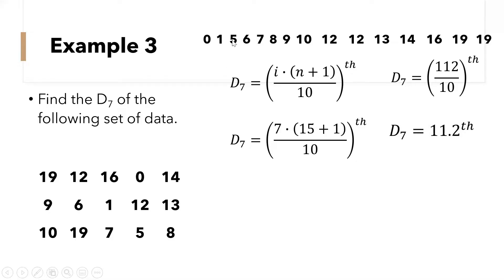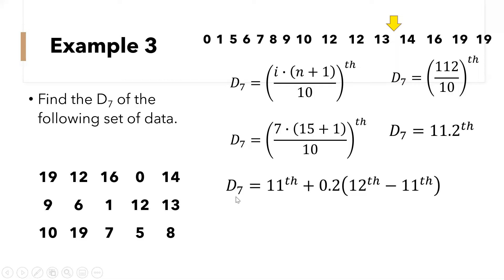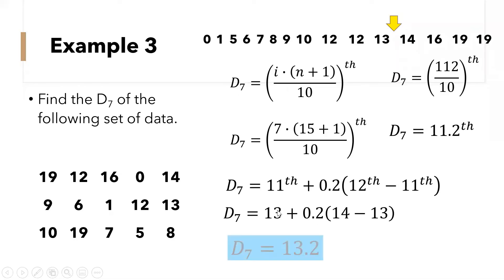Let us count: 1, 2, 3, 4, 5, 6, 7, 8, 9, 10, 11. So 11.2 falls between the 11th data and the 12th data — that is between 13 and 14 — with an excess of 0.2. So decile 7 is equal to the 11th data plus 0.2 times the 12th data minus the 11th data. That is 13 plus 0.2 times (14 minus 13), which is 0.2 times 1, plus 13, equals 13.2. So the decile 7 is 13.2.